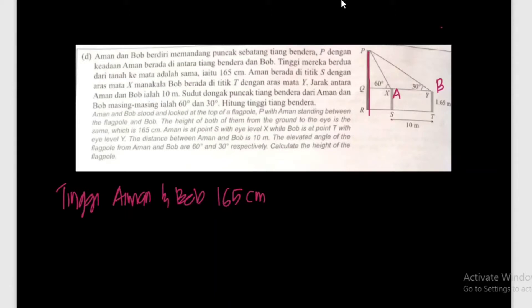Sudut dongak - puncak tiang bendera dari Aiman. Dongak macam ni, mata kita mengadap ke atas, kita panggil dia sudut dongak. Dia ada sudut dongak dan sudut tunduk.